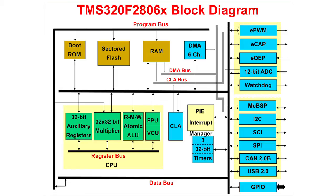The control law accelerator coprocessor is an independent and separate unit that has its own set of buses. The peripherals are grouped on the right side of the block diagram.